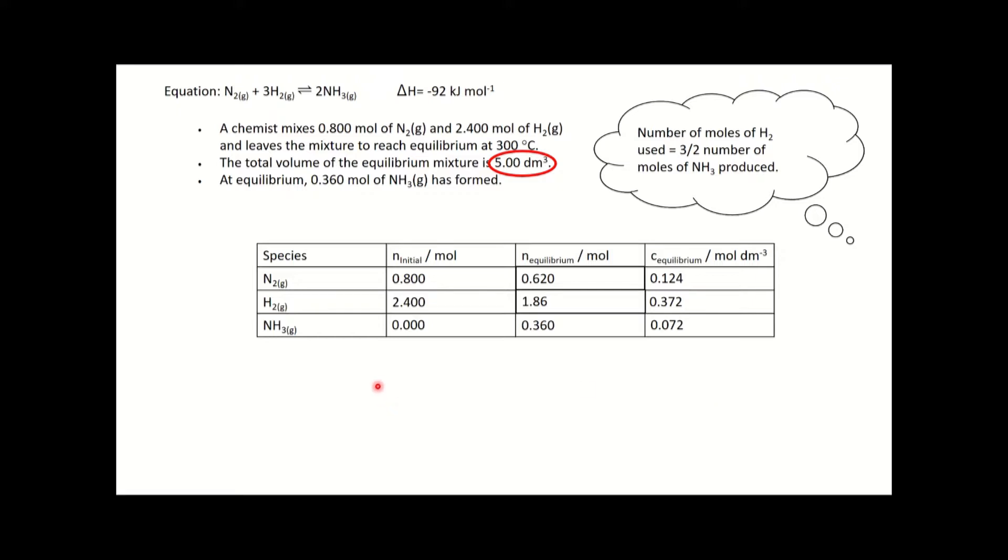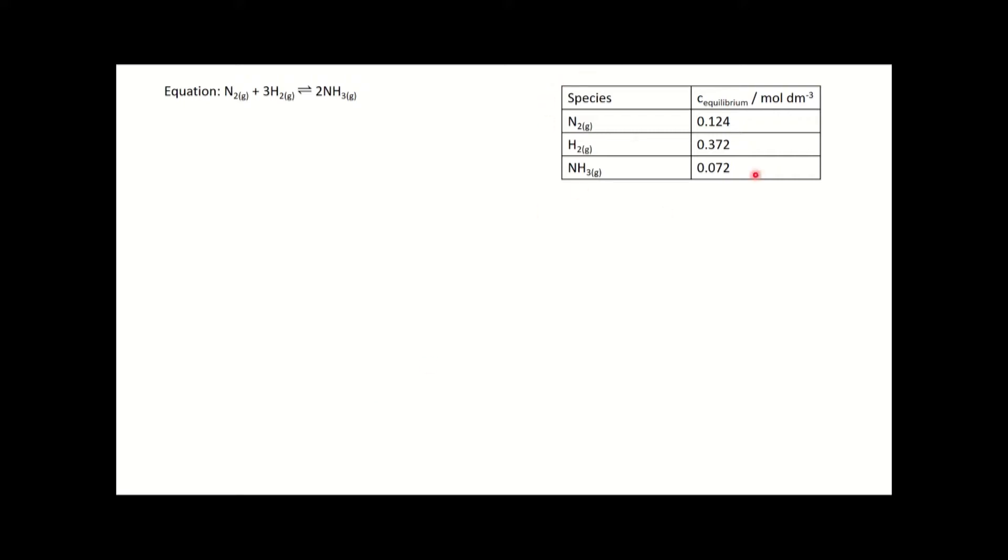We now need to write our Kc expression. I've copied the important information from the table onto this slide. We write Kc by putting the products on top and reactants on the bottom in square brackets to show concentration. That's really important - you must have square brackets according to some mark schemes. The NH3 is raised to the power of two because we have two NH3 in the equation, N2 hasn't been raised to any power because we only have one N2, and hydrogen is raised to the power of three because there is a three H2 in our equation.